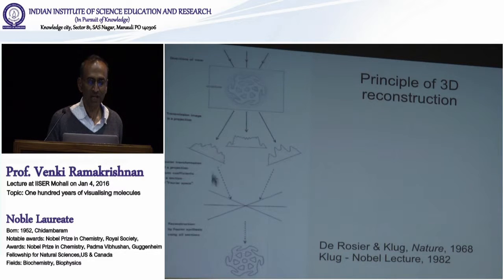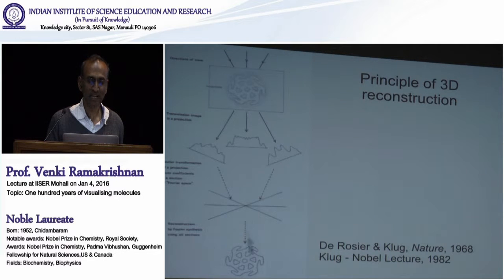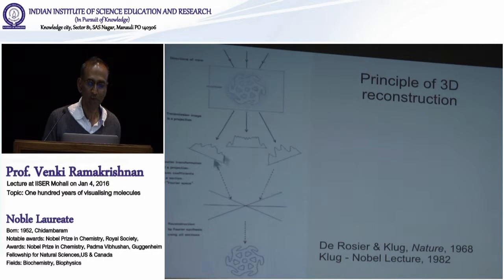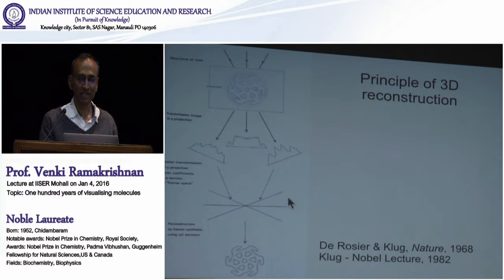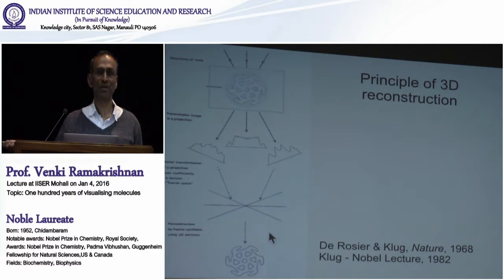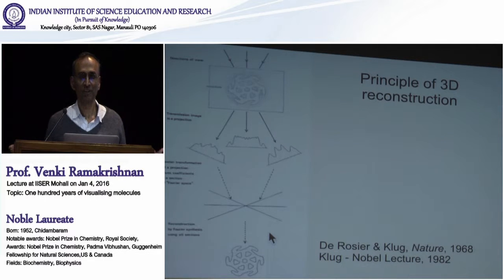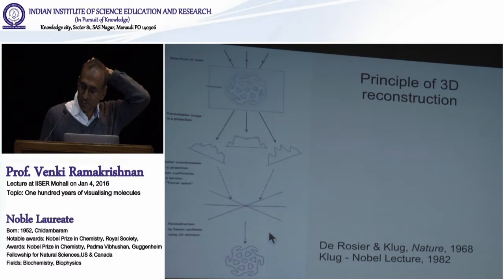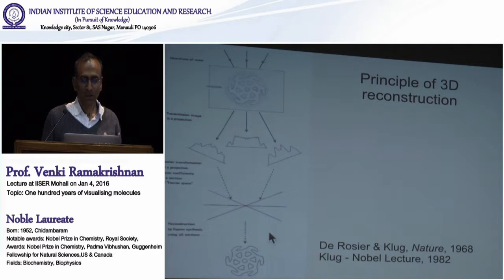If you were to take all possible two-dimensional projections, you would be collecting all planes in the three-dimensional Fourier transform of the object. If you now back-transform all those planes, you would get back the original object, because there's a theorem in mathematics that the Fourier transform of the Fourier transform is the original function. That is how he obtained the first three-dimensional pictures of molecules.